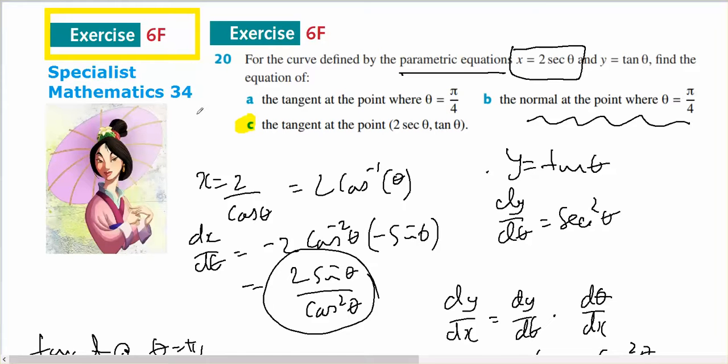This is for all you specialists. It comes out of 6F question 20 part C. The tangent at this point, since this point x equals, so it's really asking for the tangent at the point xy, which will be a general equation in terms of theta.